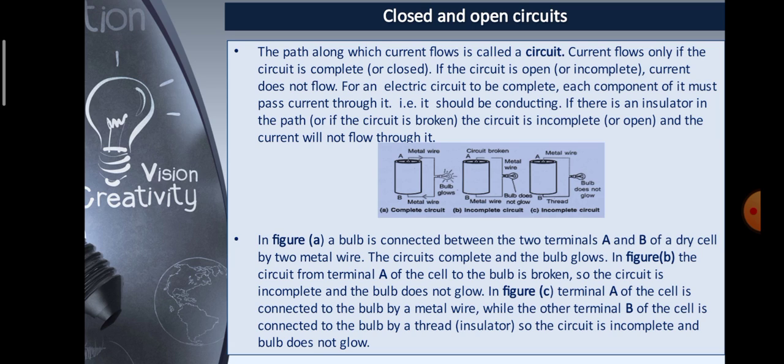In figure A, a bulb is connected between the two terminals A and B of a dry cell by two metal wires. The circuit completes and the bulb glows. In figure B, the circuit from terminal A of the cell to the bulb is broken, so the circuit is incomplete and the bulb does not glow. In figure C, terminal A of the cell is connected to the bulb by a metal wire, while the other terminal B is connected to the bulb by a thread, which is an insulator. So the circuit is incomplete and the bulb does not glow.